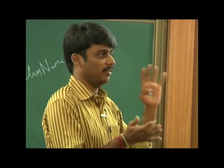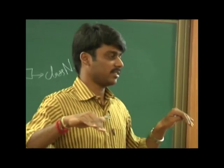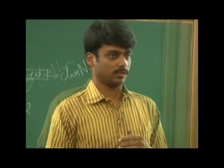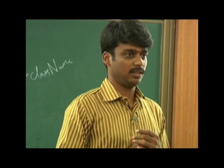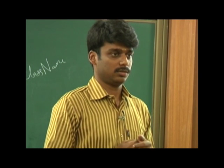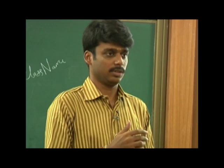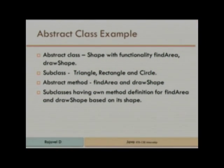For example, with shape as an abstract class: without knowing which shape, we cannot find the area or draw it. When you subclass with rectangle, triangle, or circle, we know the shape — and then we can define how to calculate the area and how to draw. That is why subclasses provide the definition for abstract methods.